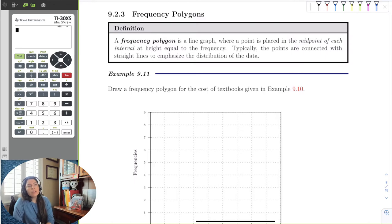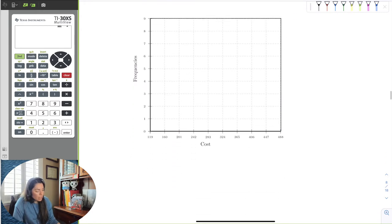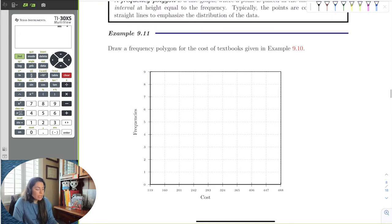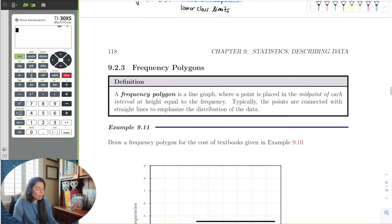Let's make a quick frequency polygon of the textbook costs in the previous example. Here I have the tick marks already and the frequencies, so all we need to know are the frequencies so we can plot those points.